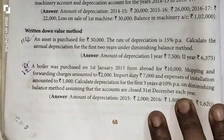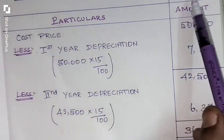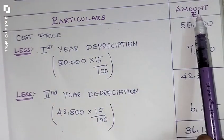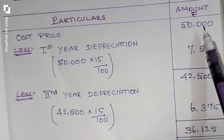Let's read it. Do the calculation. Calculate the amount of depreciation. The format is Particulars, Amount in Rupees. The cost price is how much? 50,000 Rupees.